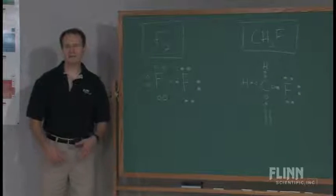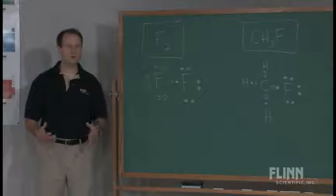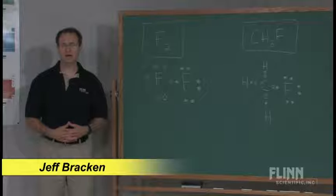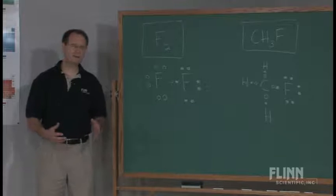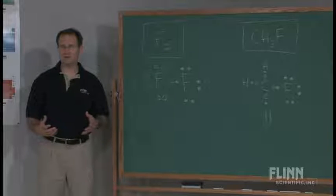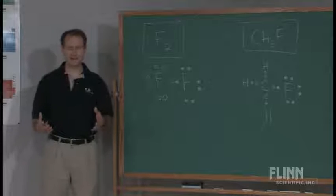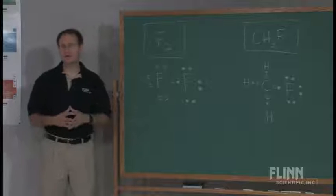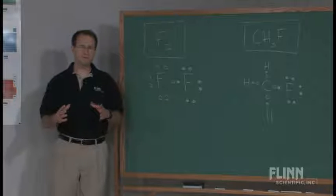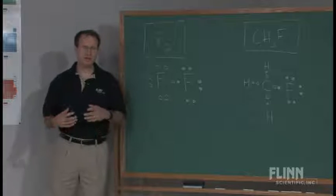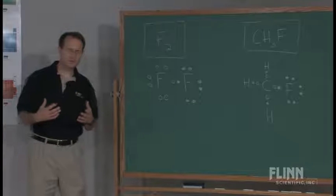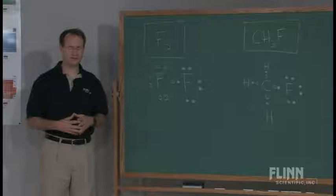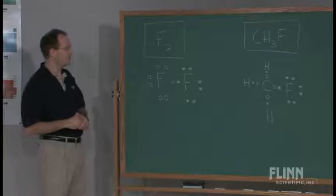Covalent bonding is a concept that seems pretty simple at the very beginning: the sharing of electrons. Once the concept is introduced, Lewis structures show how the atoms are connected to each other. Once students are able to draw Lewis structures and understand that they involve the sharing of electrons — covalent bonding — then it's time to take a look at the actual bonds.